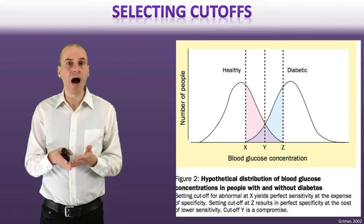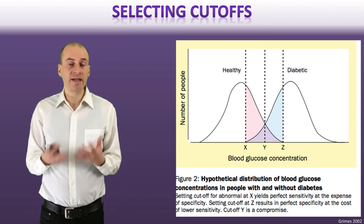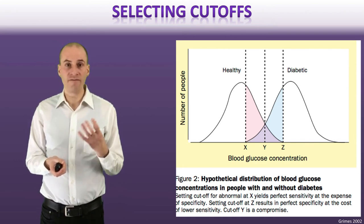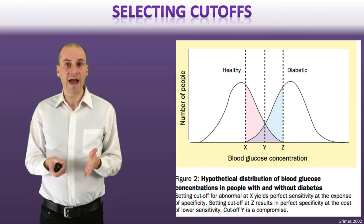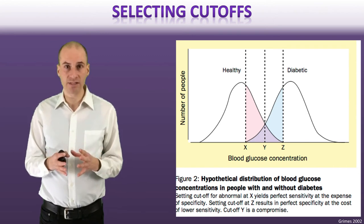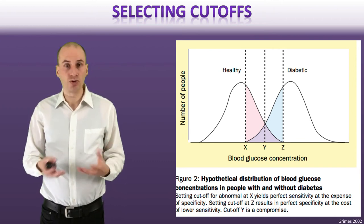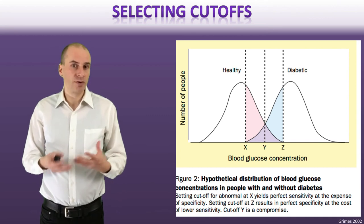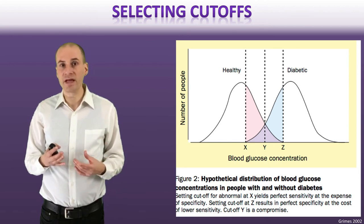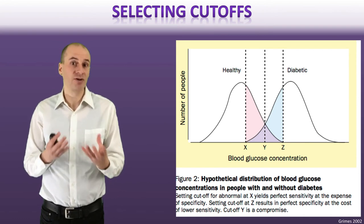How you choose that cutoff depends on the disease itself. For certain very serious diseases — a fast-moving cancer, for example — you're going to want to pick the most sensitive threshold to get everybody who has that cancer as fast as possible. You might have false positives, but you'll deal with that as it comes. It's not necessarily the case that you want to maximize either sensitivity or specificity — you're going to make a choice between them because it's often a trade-off between the two.